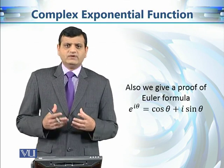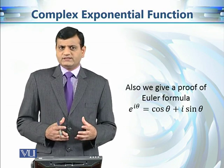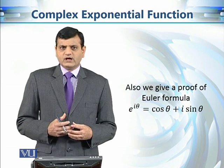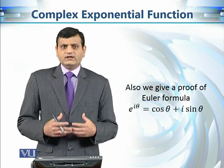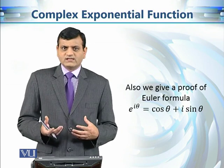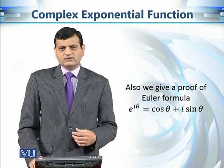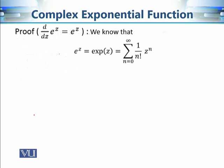Euler's formula — which we have discussed and used in earlier modules but never proved — states that e^(iθ) = cosθ + i·sinθ. The reason we hadn't proved it is that we hadn't yet defined how to evaluate e^(iθ), where the exponent is a complex number. Now that we have defined e^z for complex z, we can prove this formula.